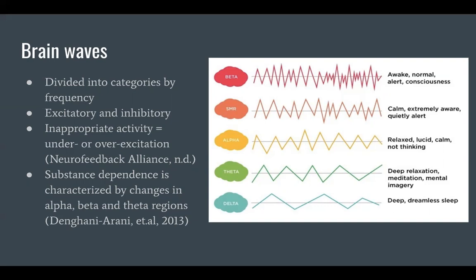The electrical activity of individuals with substance dependence is often characterized by changes in the alpha, beta, and theta regions. For example, alcoholic patients often present with changes in the beta and alpha bandwidths, while cocaine-addicted patients often show increased beta, delta, and frontal alpha activity.